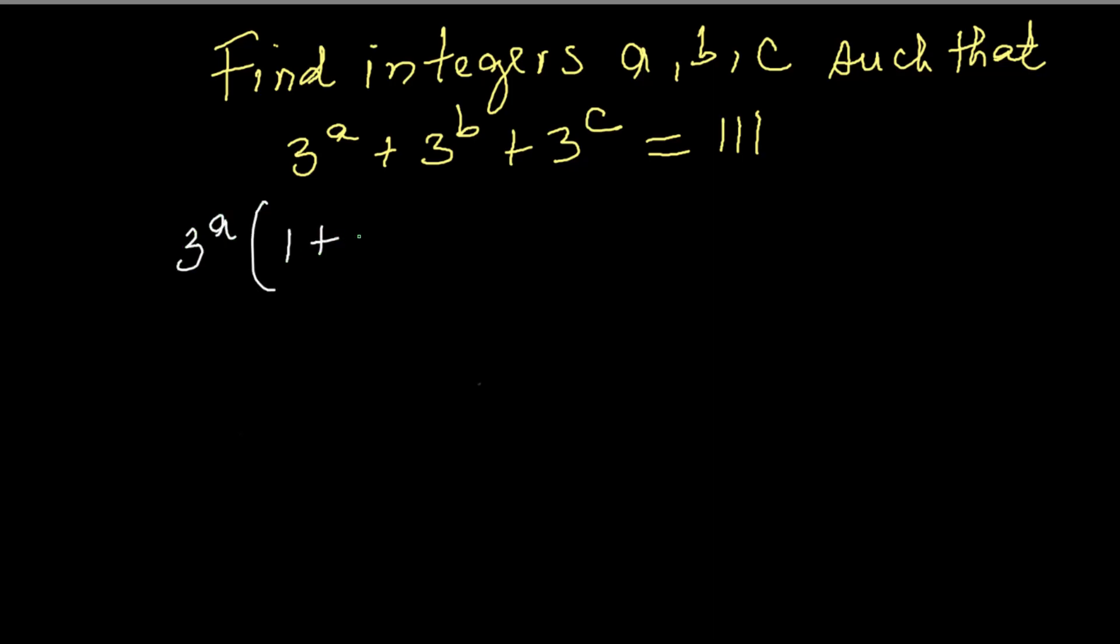Let A be the smallest exponent. Factor it out: 3 raised to the power A multiplied by 1 plus 3 raised to the power B minus A plus 3 raised to the power C minus A equals 111.